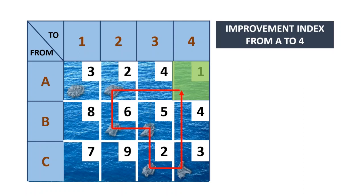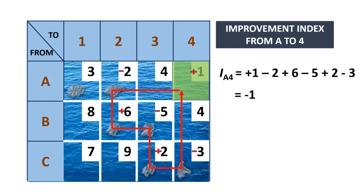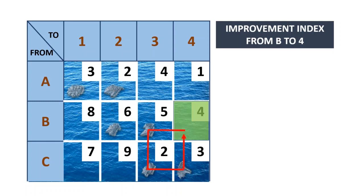For route A to 4, you start with plus on 1, then minus, plus, minus, plus, minus. Adding up all those unit costs gives minus 3. The negative value means the cost will be reduced by 3 per unit. So if you were to add 10 units on this route, the cost would be reduced by minus 30.